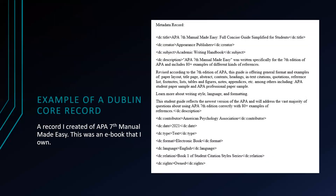This is an example of a Dublin Core record that I created from an e-book I own called APA Seventh Manual Made Easy: A Full, Concise Guide Simplified for Students. I included creator information, subject information, and a description taken directly from the website where I purchased it. I put the American Psychological Association as the contributor since the work is based on their style. I also included the date of publication, the type — which is text since it's an electronic book — the format, and the language, which is English. The publishers have a series of books regarding citation styles, so in relation, it's book one of the student citation style series. Since I'm the owner, I listed myself under rights.